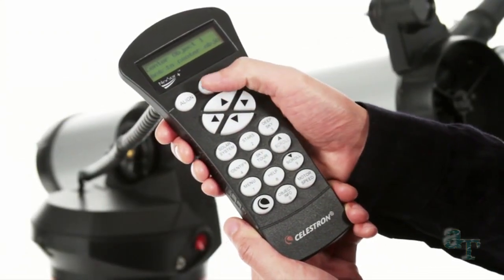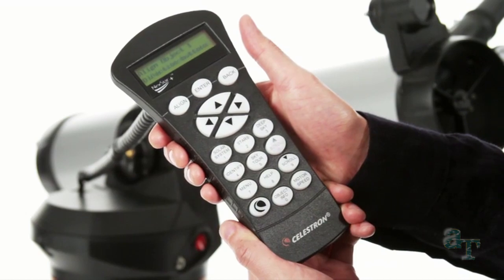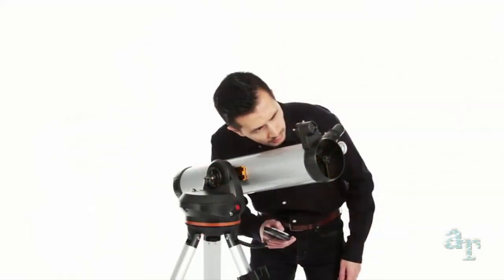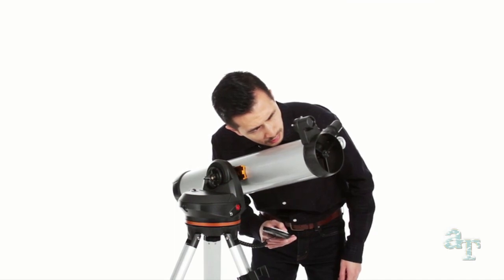Getting started is easy thanks to our proprietary SkyAlign procedure. Use the directional buttons to center any three celestial objects in the eyepiece and your LCM is aligned and ready to locate and identify objects for you.